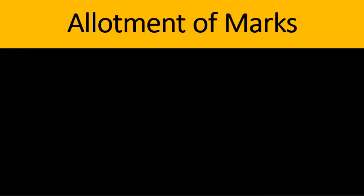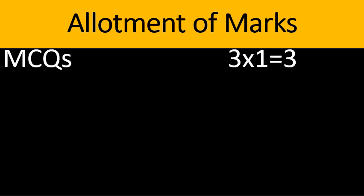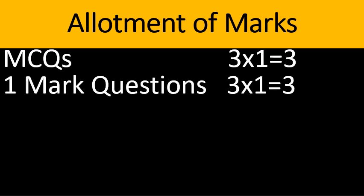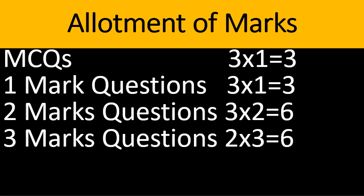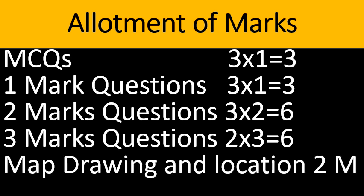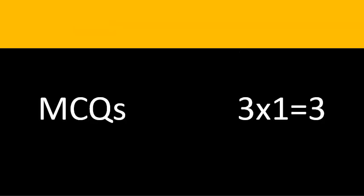Let us see the allotment of marks. There are three MCQs worth one mark each, three one-mark questions, three two-mark questions, and two three-mark questions each carrying three marks. There is one map drawing and location question — one mark for drawing and locating two places. Now let us see the question paper.